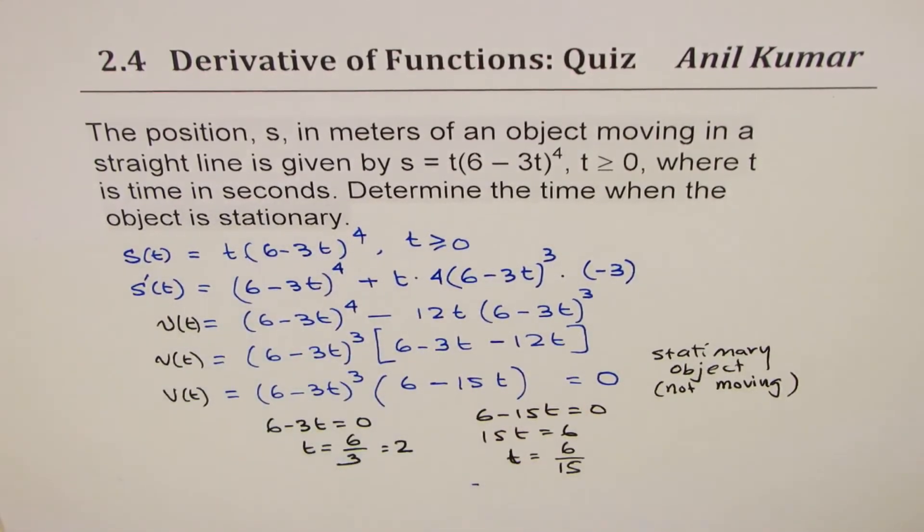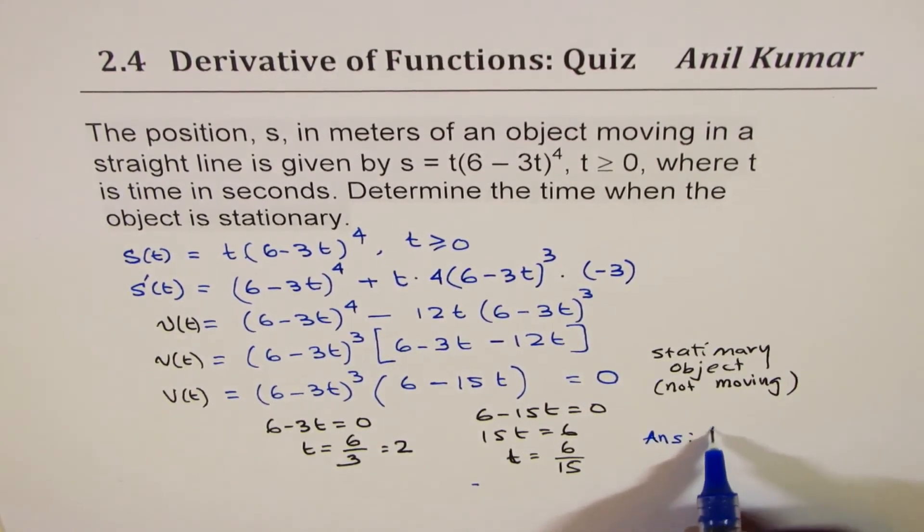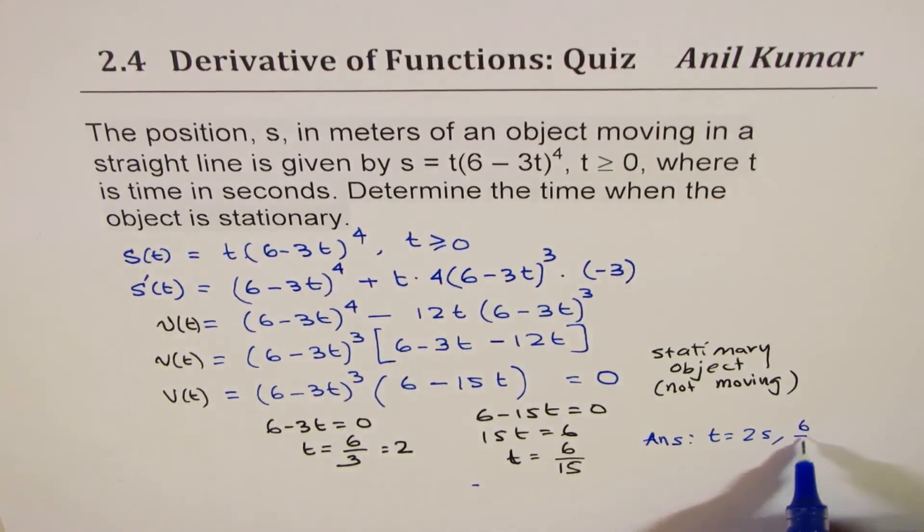Time is given in seconds. So the answer is t equals 2 seconds or t equals 6 over 15 seconds for the object to be stationary.